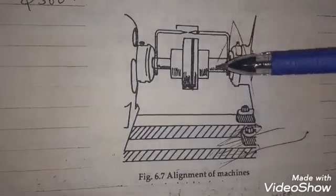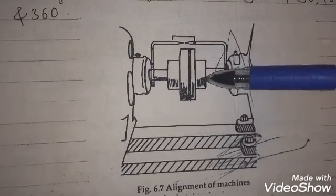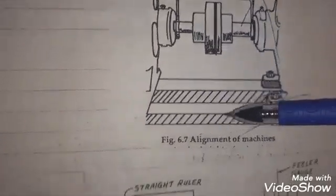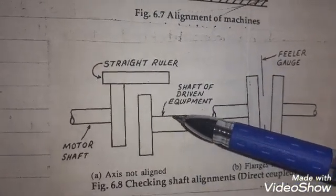Next we have to check whether these two coupling flanges are properly aligned or not. And for that purpose, we require to have the steel ruler and the filler gauges.